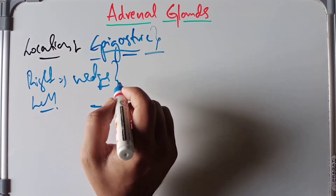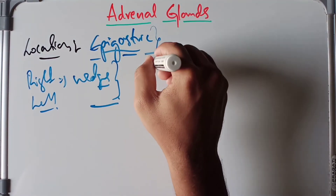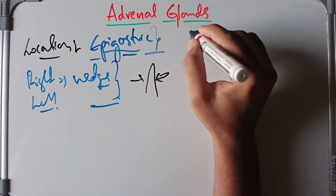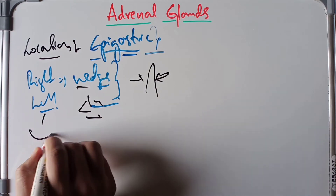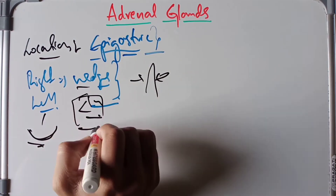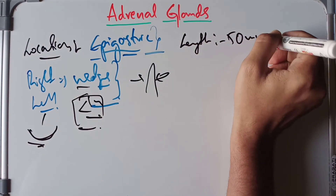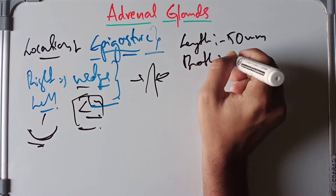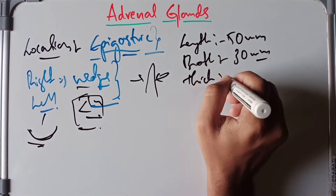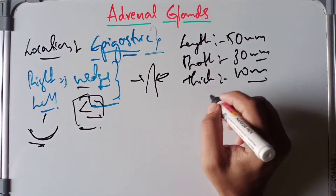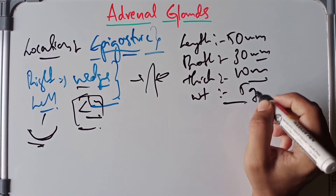Each gland is flattened anteroposteriorly. The right gland is triangular in shape and the left gland is semilunar in shape. The length of each gland varies up to 50 millimeters, width up to 30 millimeters, thickness up to 10 millimeters, and weight up to 5 grams.